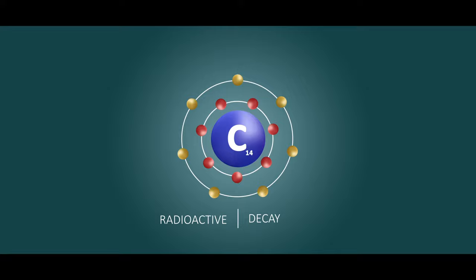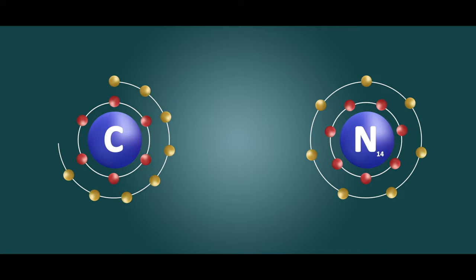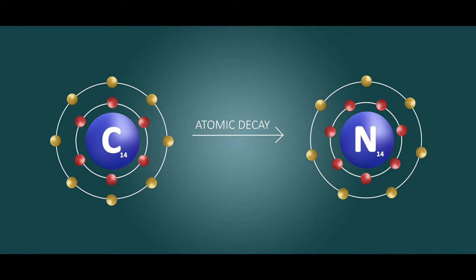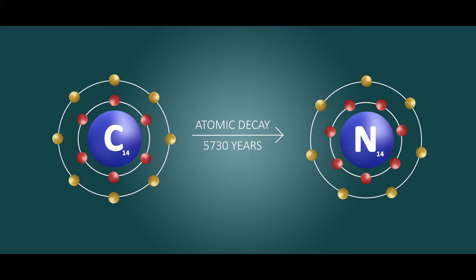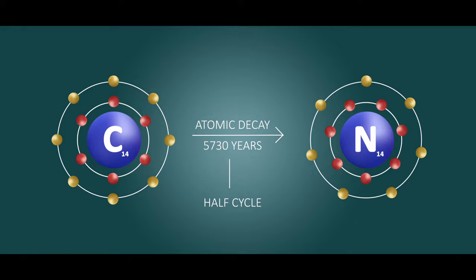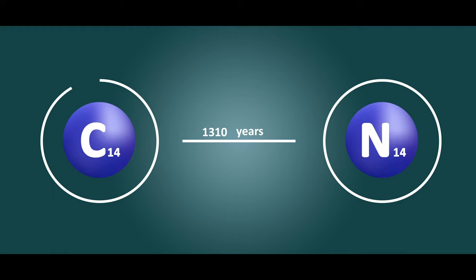This process of carbon-14 becoming nitrogen-14 is called atomic decay, and the time taken for this is 5,730 years, and this duration is called a half-cycle. Why is this called a half-cycle? Because when C14 decays to N14, only half the original sample of C14 remains in the organic matter.